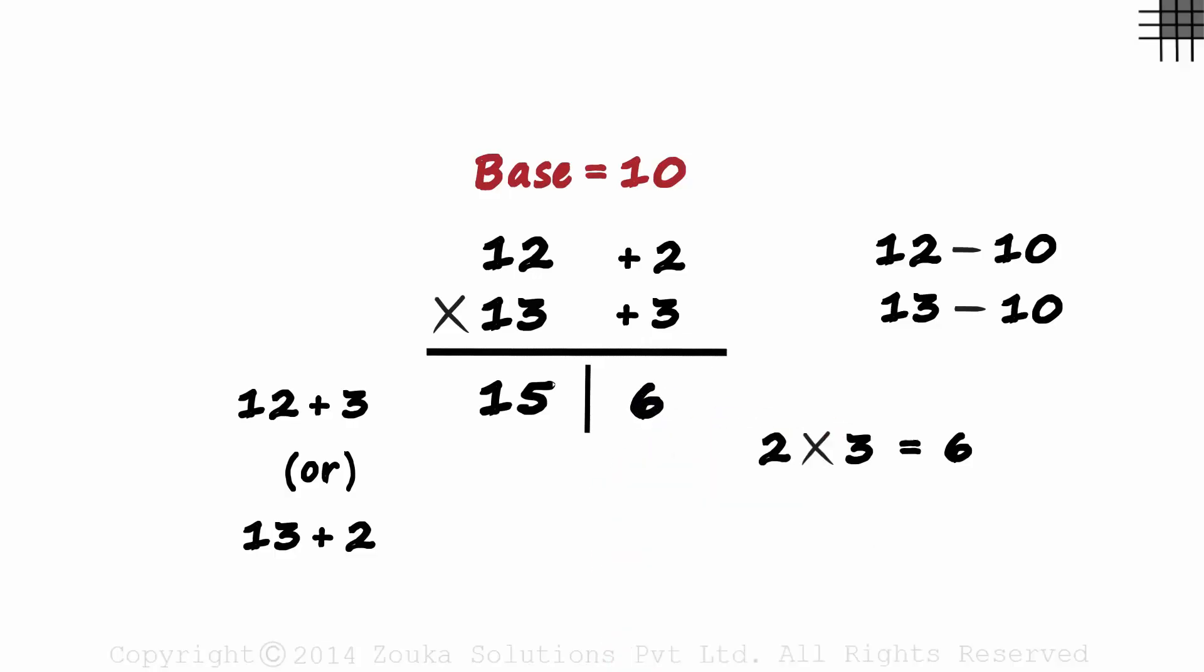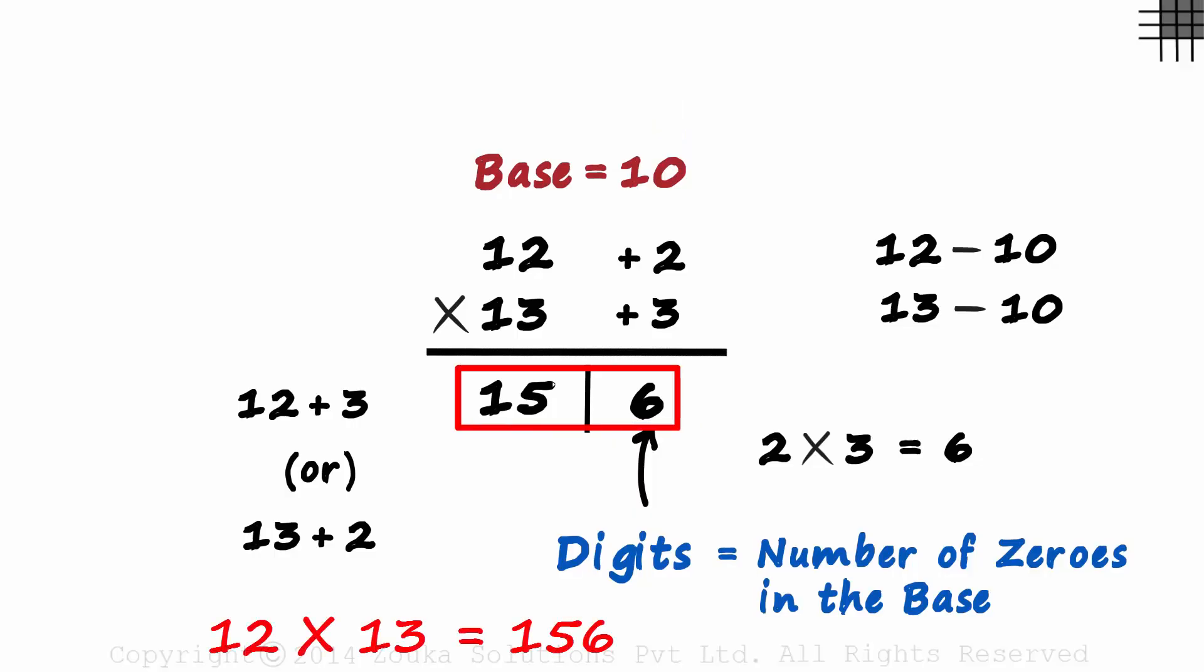So we write a 6 on the right. Remember, the number of digits on the right will be equal to the number of zeros in the base. 1 0 hence 1 digit. 12 times 13 is 156.